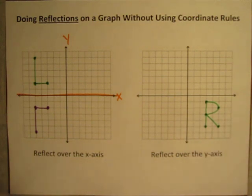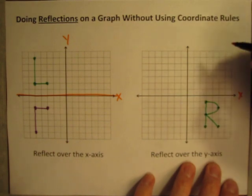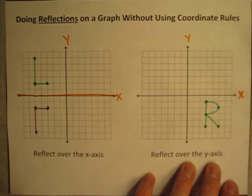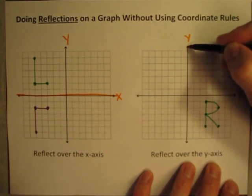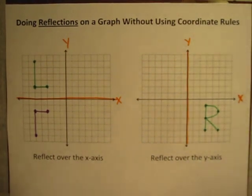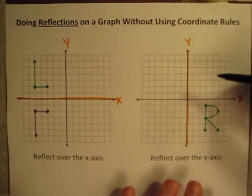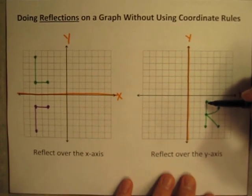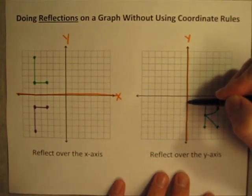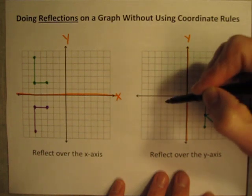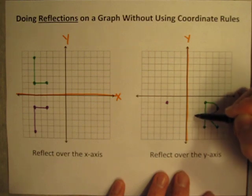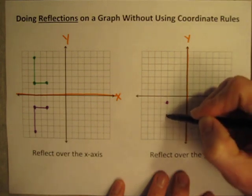How about reflecting over the y-axis? Here is the x-axis and here is the y-axis. Make sure you're reflecting over the right line. I'm going to reflect over the y-axis. We'll do the same exact process: start with a point, see how far it is from the line of reflection, and count that distance on the other side. This point is three to the right of the line, so let's count three to the left. This one is also three to the right, so let's go three to the left.